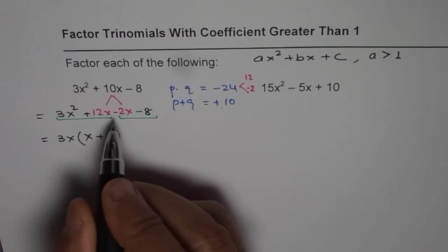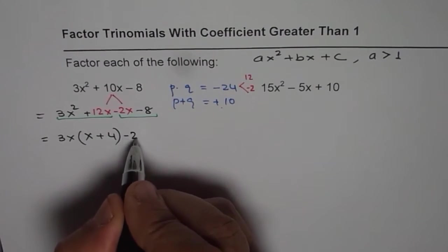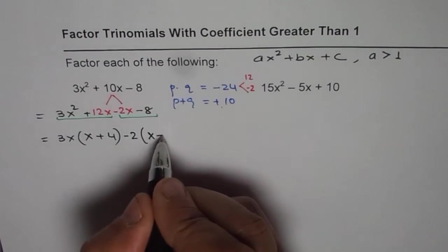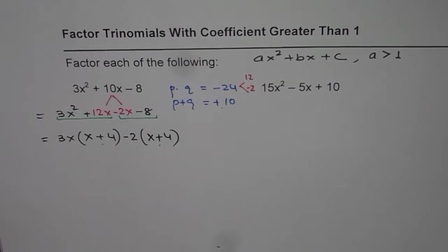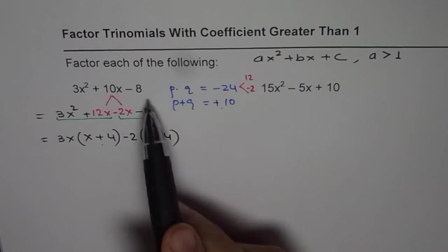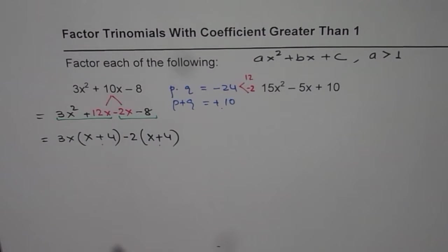What is common in this case? Minus 2. Let us take -2 common. We will get x + 4. Somehow if you do not get these numbers same then it means something wrong has happened. Go back and check your numbers.